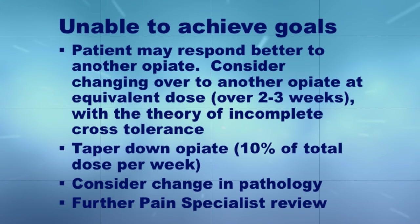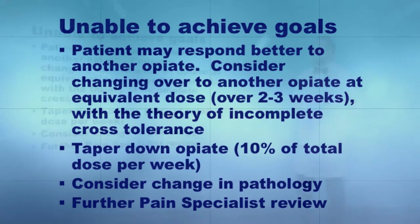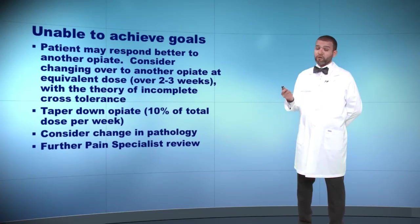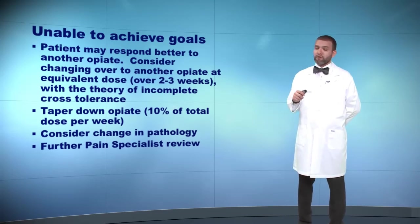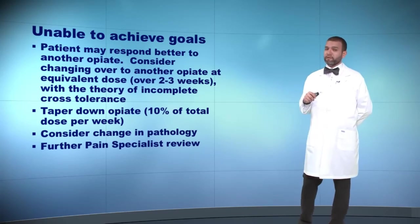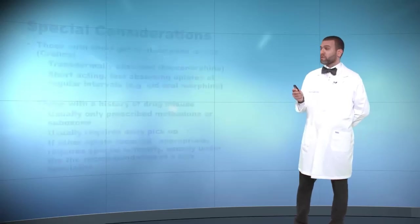Using the theory of incomplete cross-tolerance, taper down the opioid by 10% of the total dose per week, consider changing the opioid if the patient is not responding to the initial one, and refer further to a pain specialist.